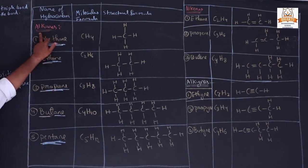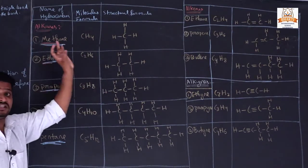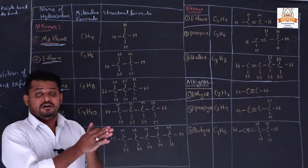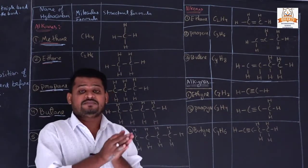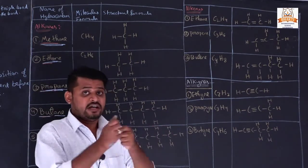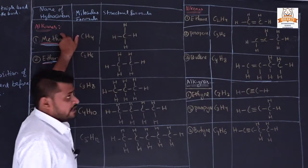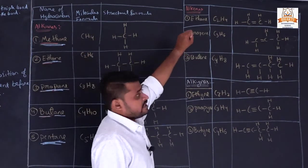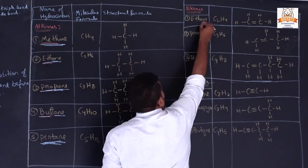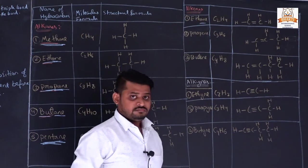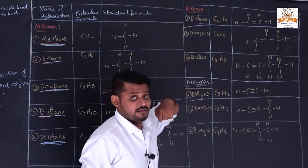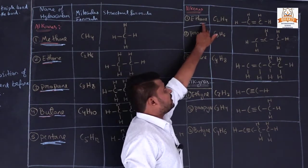Did you understand what an alkane is? If in a hydrocarbon the carbon atoms form only a single bond — combining with another atom with a single bond — then it is called an alkane. Now for alkenes: why do we use the suffix '-ene'? In any hydrocarbon we use '-ane' for single bonds, but here we use '-ene' because in this carbon combines with another carbon with a double bond.